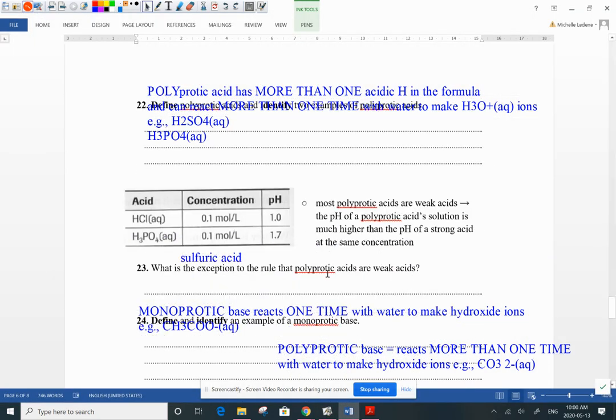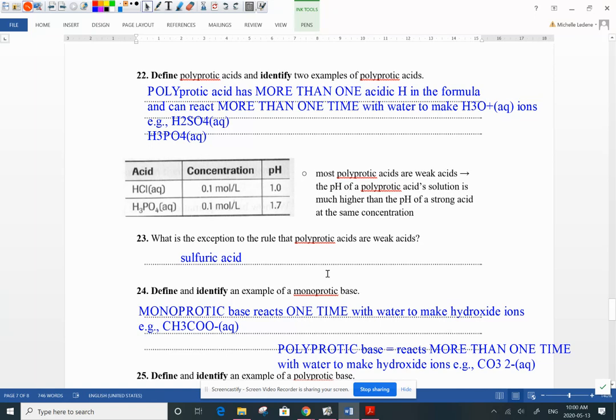They have more than one acidic hydrogen in their formula. They can react more than one time with water to make hydronium ions. So H2SO4, two hydrogens, that's more than one. It's polyprotic. H3, well, there's three hydrogens. And this guy is pretty important. There's only one strong acid that is diprotic or polyprotic. The majority of these polyprotic acids like this guy are weak acids.